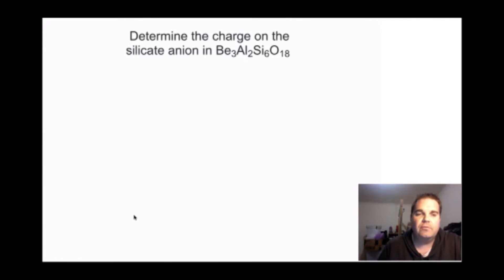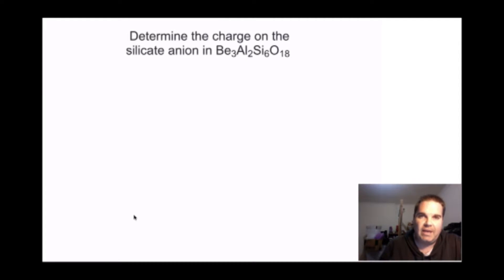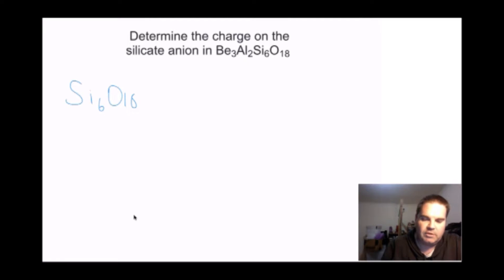Here firstly I've got a question: determine the charge on the silicate anion in Be3Al2Si6O18. So we're looking at Si6O18 and we're trying to determine the charge on that one.